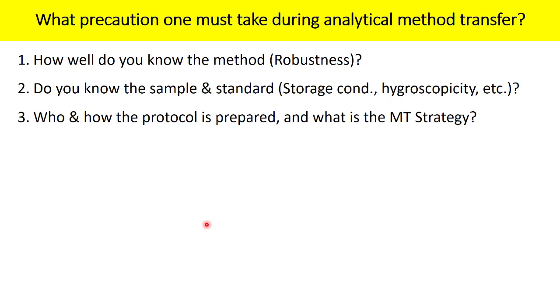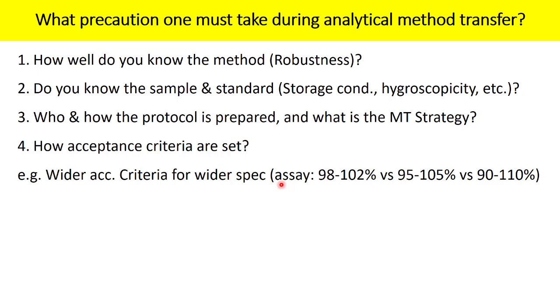According to that acceptance criteria needs to be set and that is the point number four. When it comes to setting an acceptance criteria, none of the guidelines talks about the acceptance criteria because your analytical test procedure is subjective to your product and it can be different for different organizations. For that reason, the acceptance criteria needs to be set based onto the specification part. What is the specification for the test under transfer? The wider is the acceptance criteria for the spec for that particular parameter.